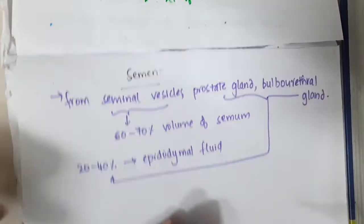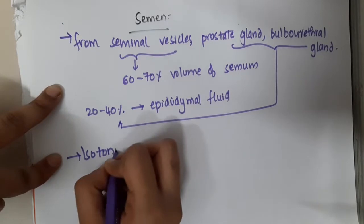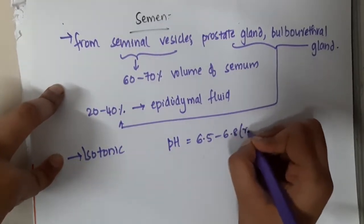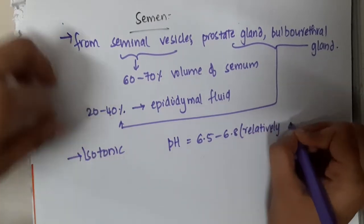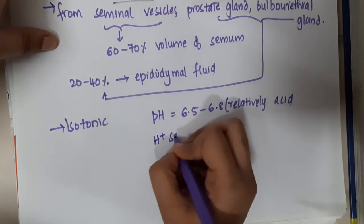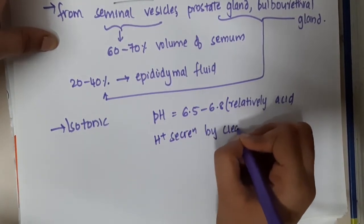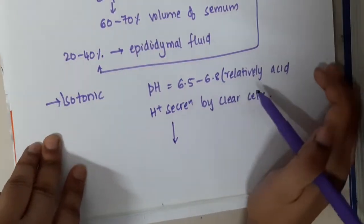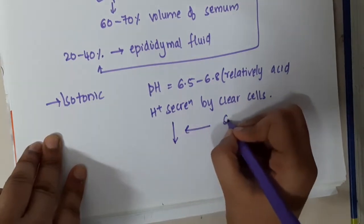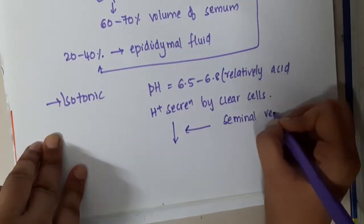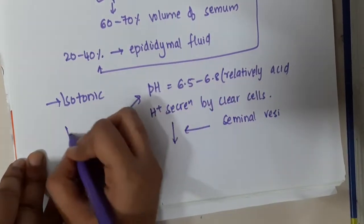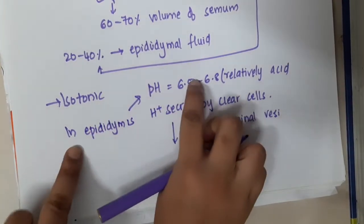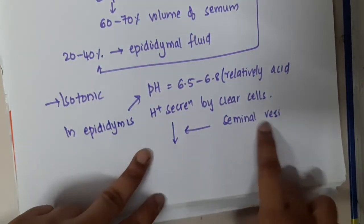This seminal plasma is isotonic. The pH is 6.5 to 6.8, relatively acidic. Why is it relatively acidic? Because of H-plus secretion by clear cells. This acidity is present in epididymis. In epididymis, the secretions are acidic because of H-plus secretions by clear cells.